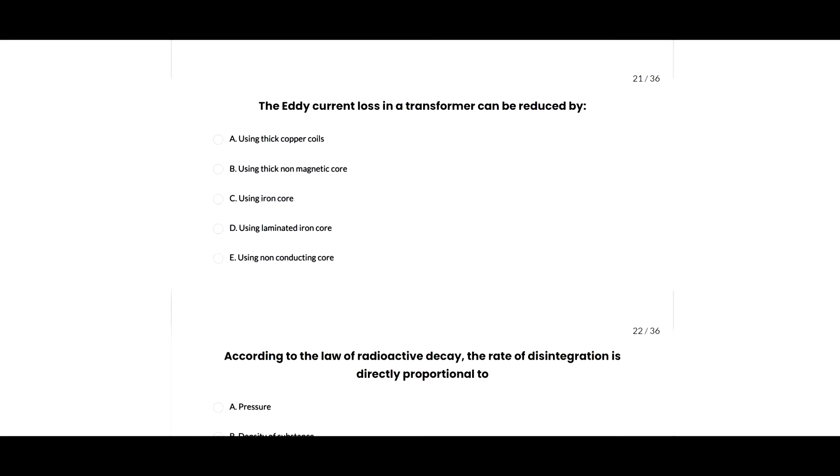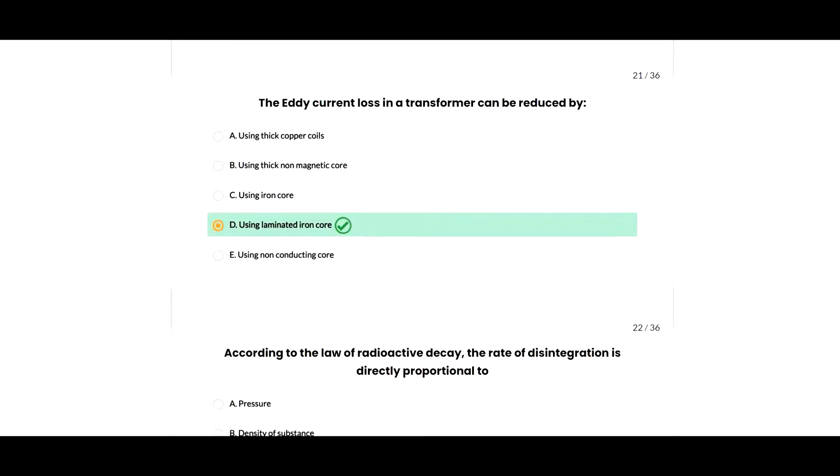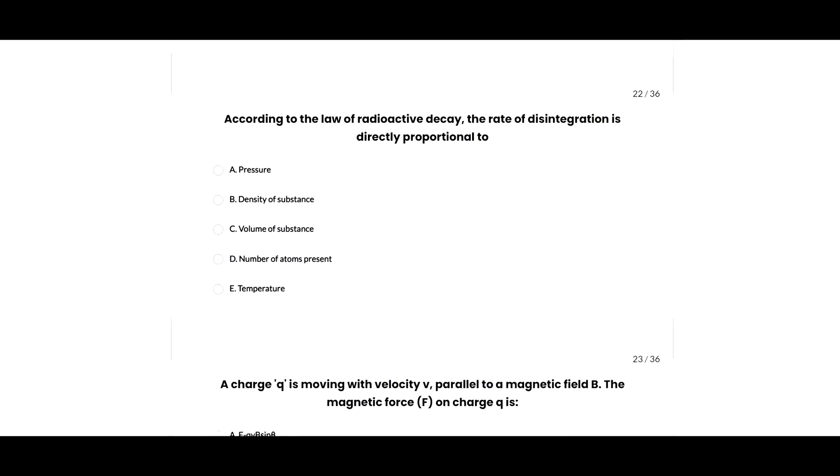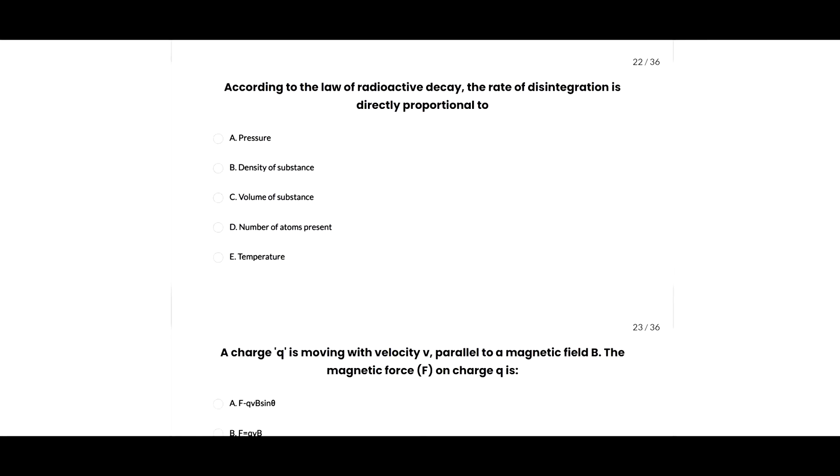Next question: eddy current losses in a transformer can be reduced by using a laminated iron core, so A option is correct. Next question: according to the law of radioactive decay, the rate of disintegration is directly proportional to the number of atoms present, so D option is correct.